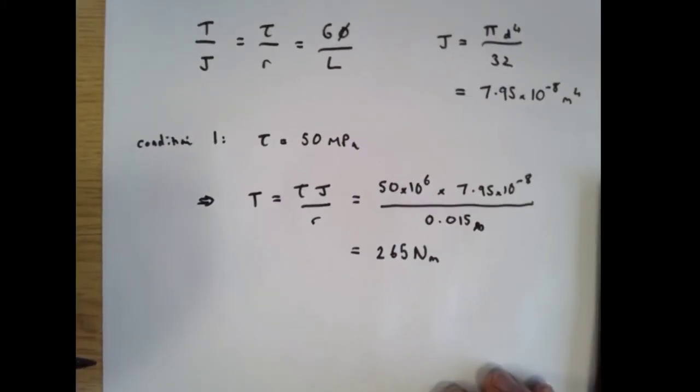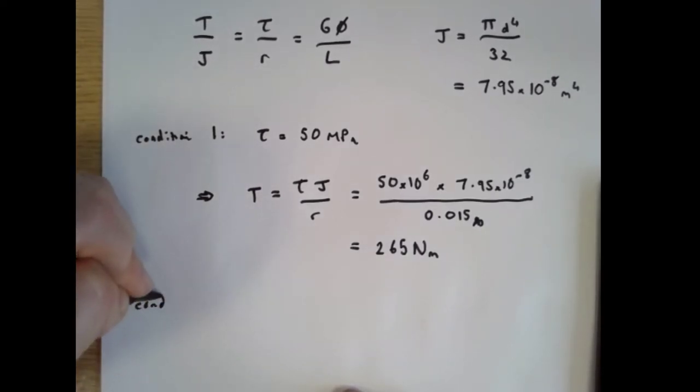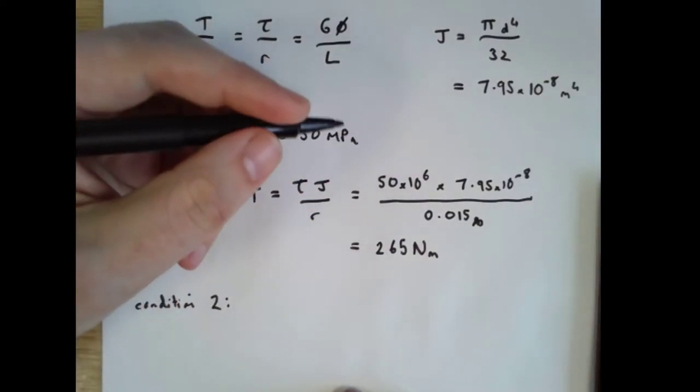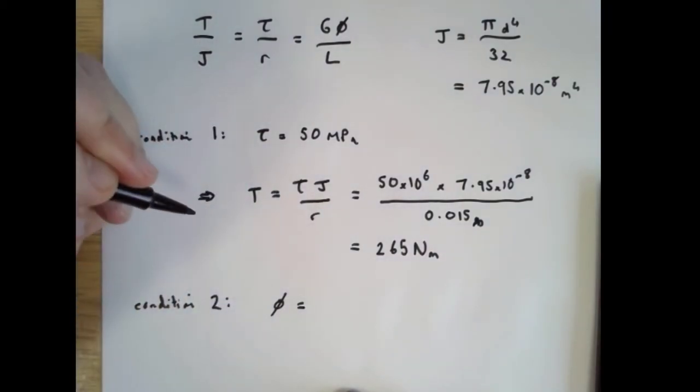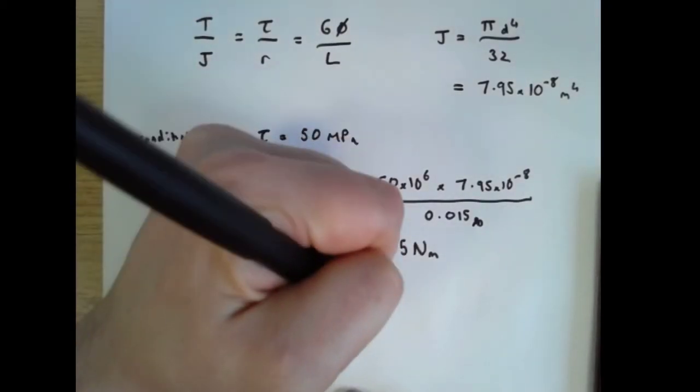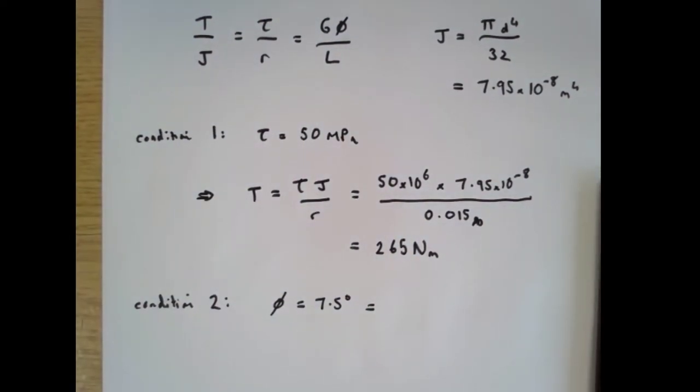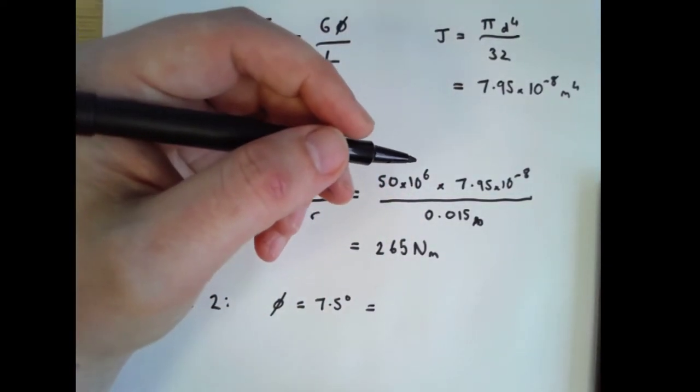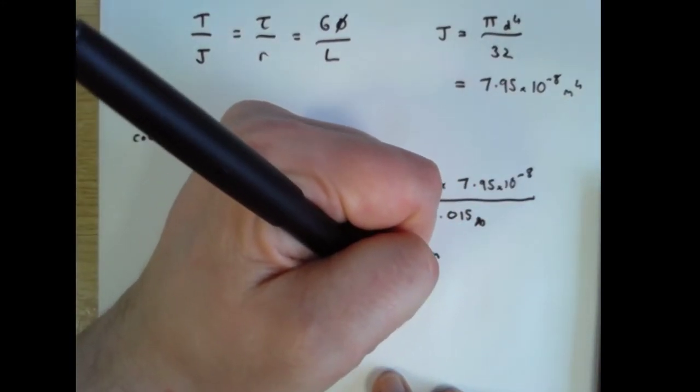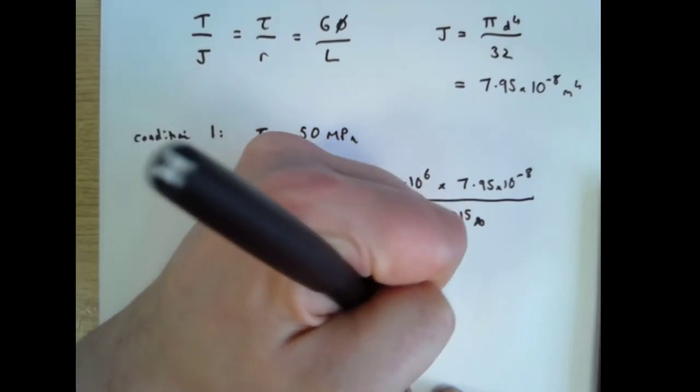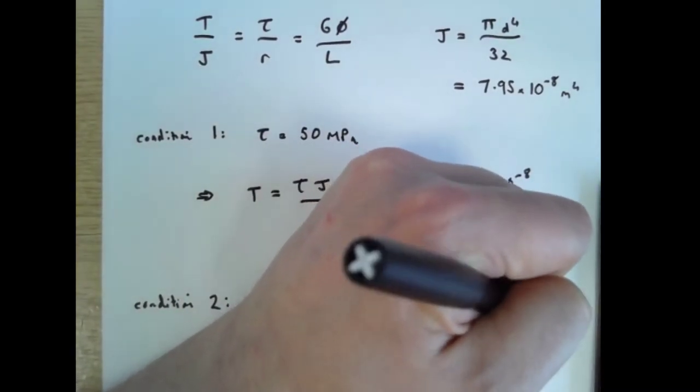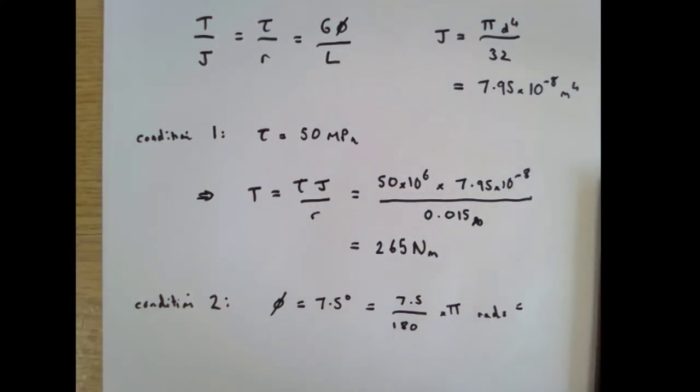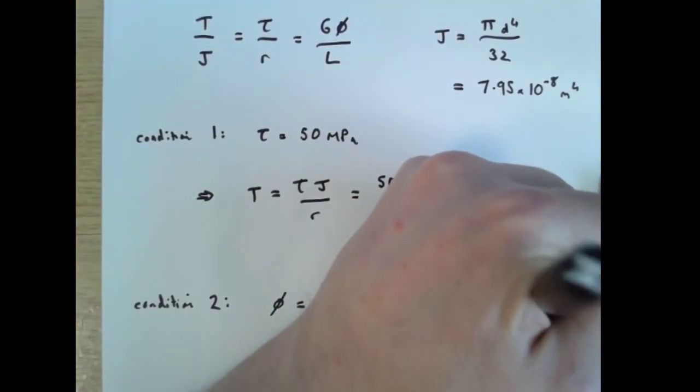So that's one of our conditions, that's the maximum torque if we don't want to have too high a shear stress. Condition two is that the maximum twist angle is 7.5 degrees. To convert from degrees to radians you multiply by pi and divide by 180. So we've got 7.5 divided by 180 times pi radians which is 0.131 radians.